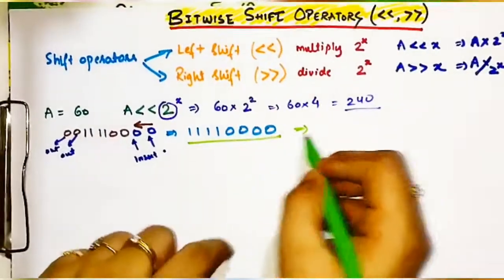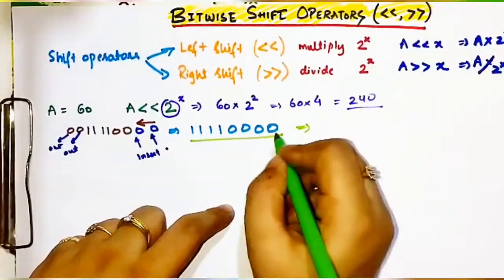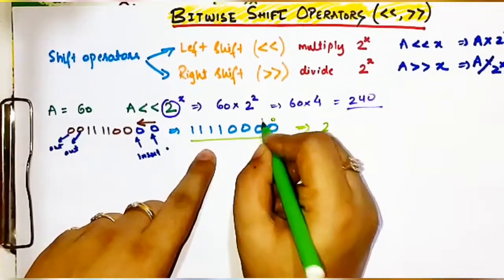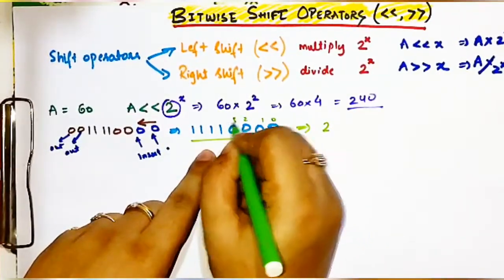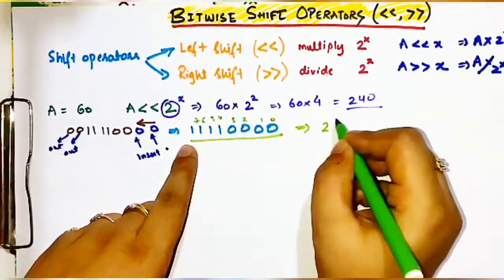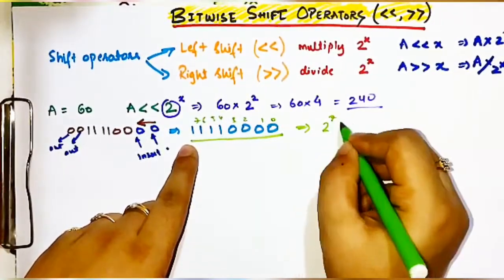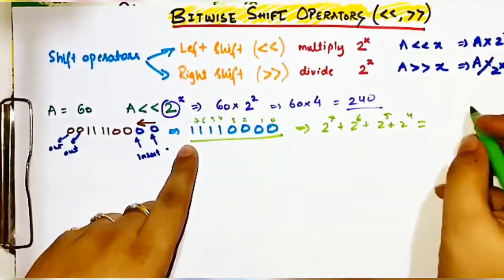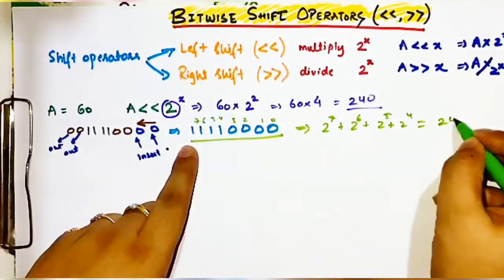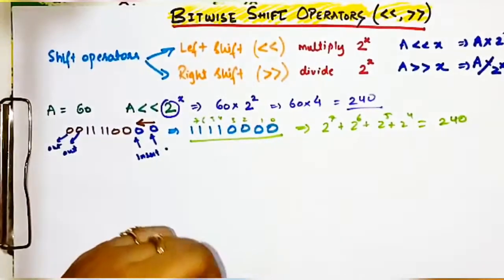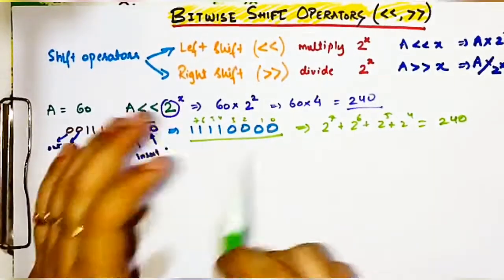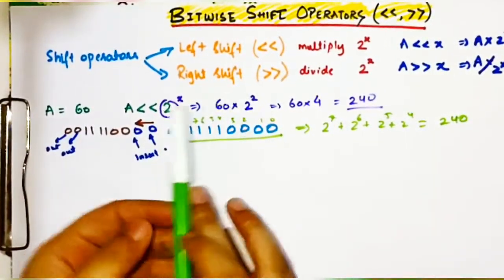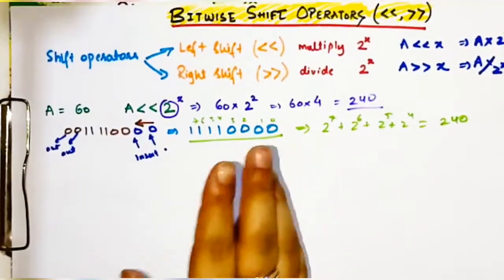Now let's calculate the decimal value of 11110000. The positions are 2^7 + 2^6 + 2^5 + 2^4, which equals 128 + 64 + 32 + 16 = 240. This confirms the logic behind bitwise binary shift operators.